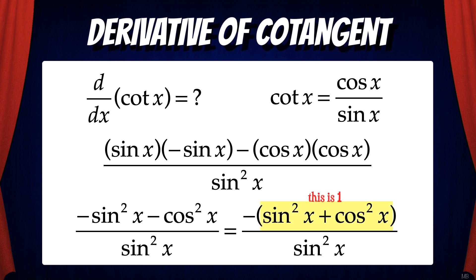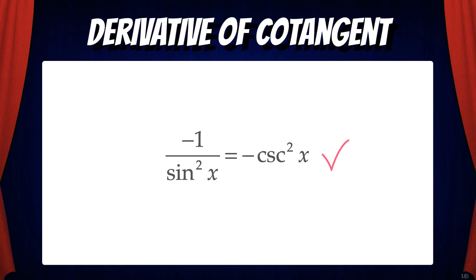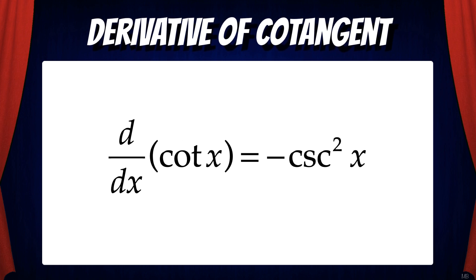Then we'll factor out a negative 1 from the numerator, and you see we have a trig identity appear again. We get sine squared x plus cosine squared x, which is just 1. So this reduces to negative 1 over sine squared x, and that can be converted to negative cosecant squared x. So the derivative of cotan x is negative cosecant squared x.